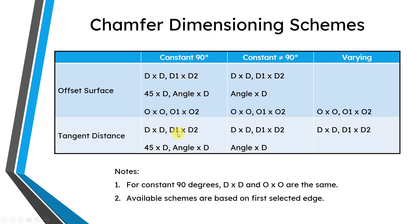One other thing to be aware of: you can select multiple edges for a chamfer in a given set. The first selected edge is going to determine which dimensioning schemes are available to you, based on the angle between the surfaces forming that edge. I know I really went into the weeds here, but this is just deep background on the chamfer feature. Now let's jump into Creo Parametric and take a look at a few simple examples.